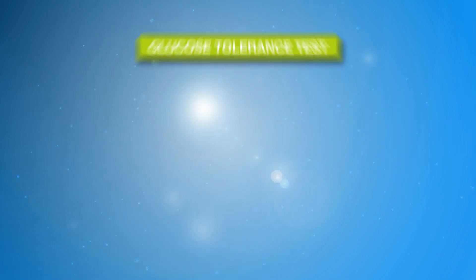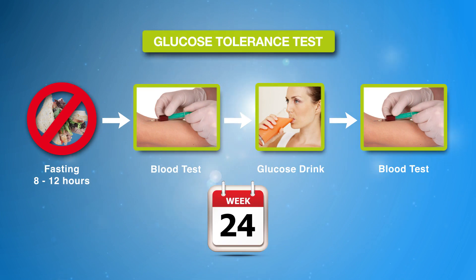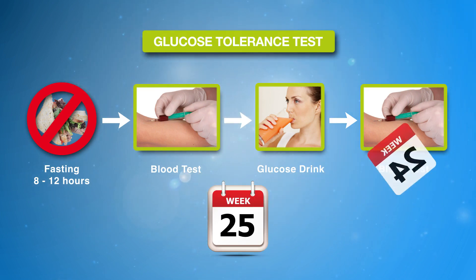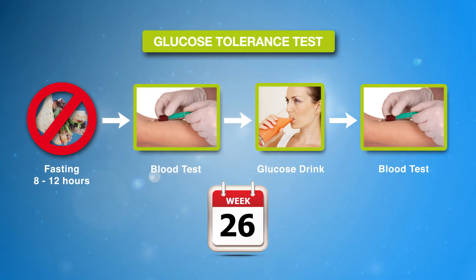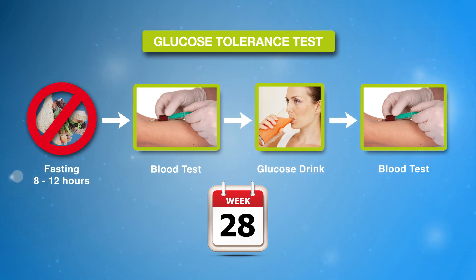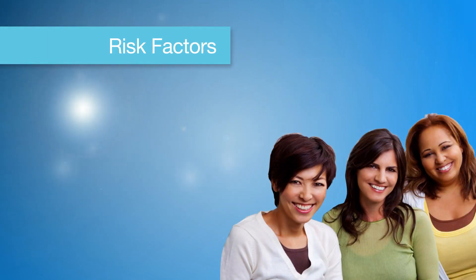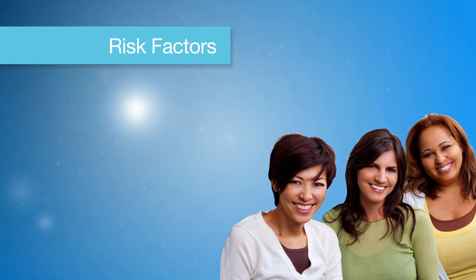Screening for gestational diabetes involves an oral glucose tolerance test. Most women are screened around the 24th to 28th week of pregnancy, as at this stage hormone levels are higher than they were earlier in the pregnancy. Diagnosis at this stage allows time to manage your blood glucose levels in order to manage the baby's growth and prevent complications. Some women may be screened earlier than the 24th to the 28th week if they are at a higher risk of developing gestational diabetes.